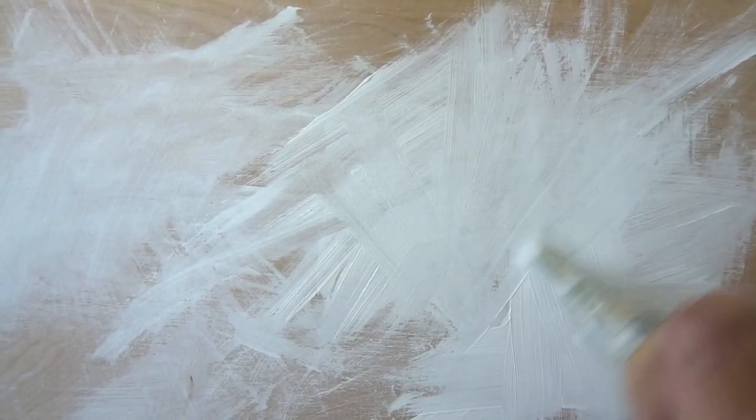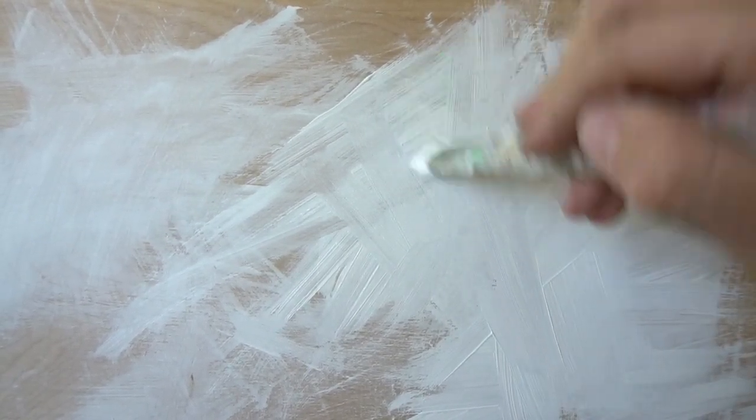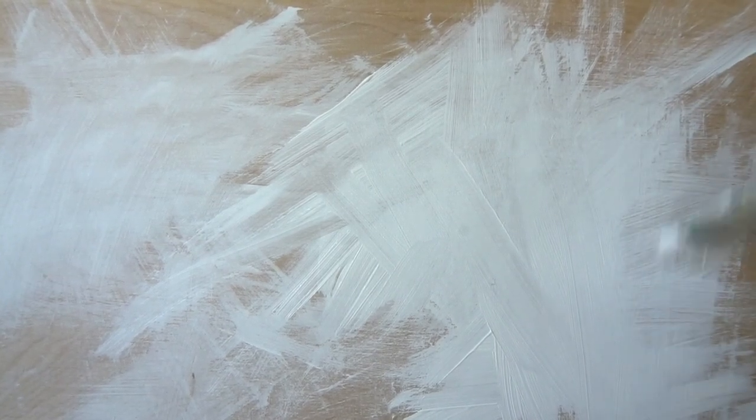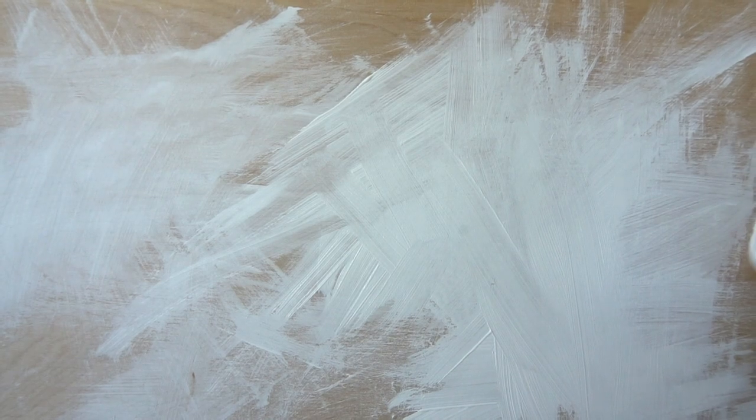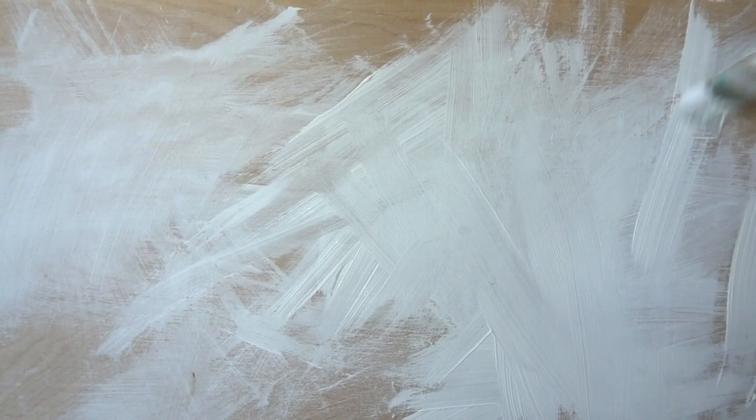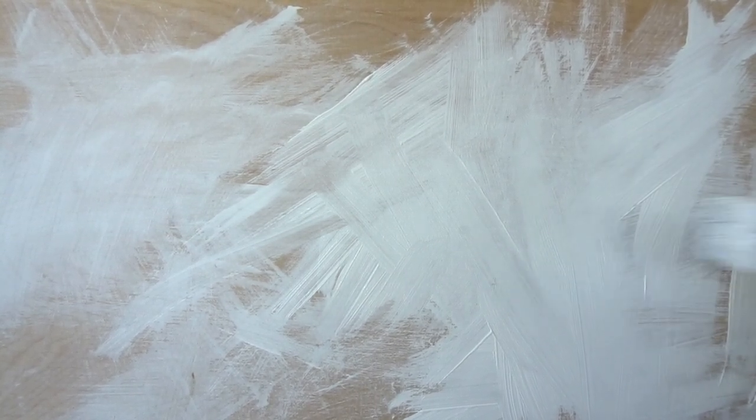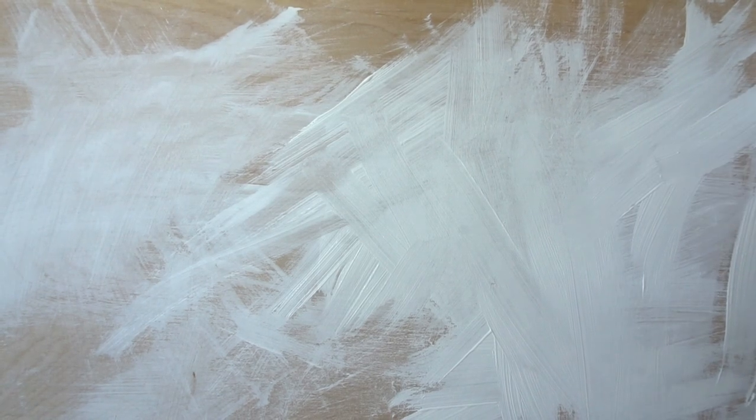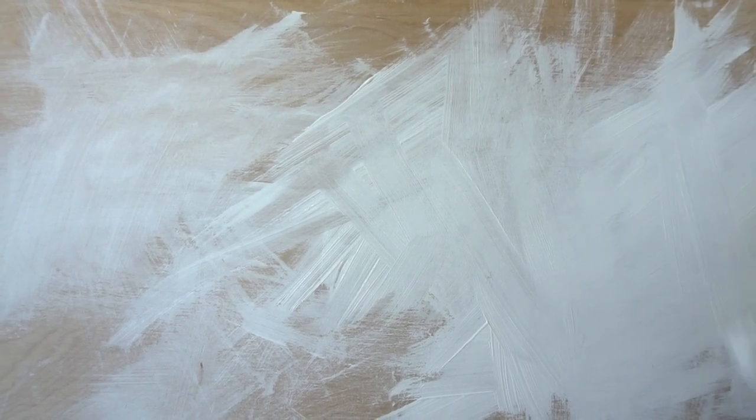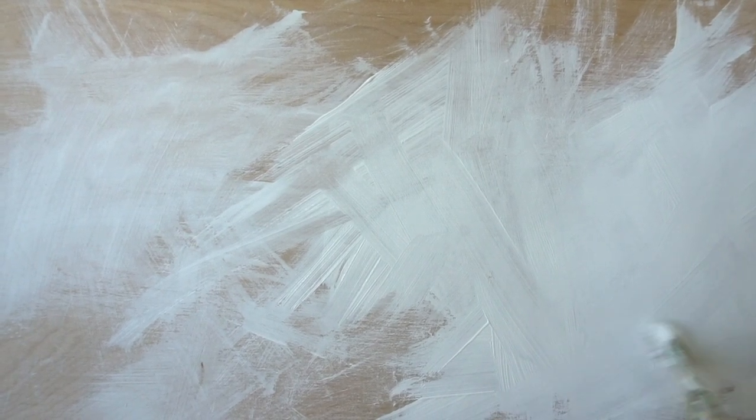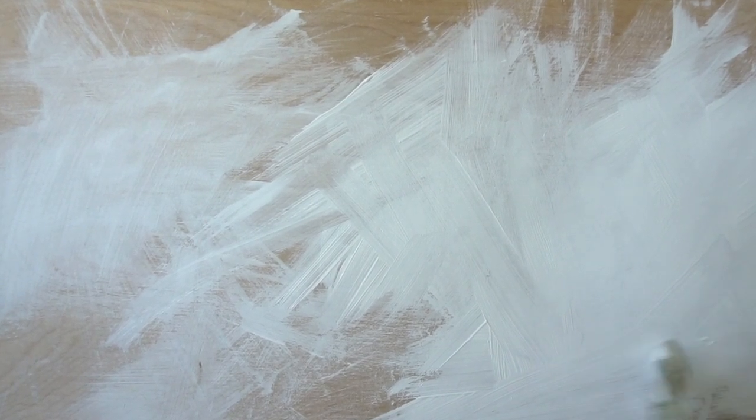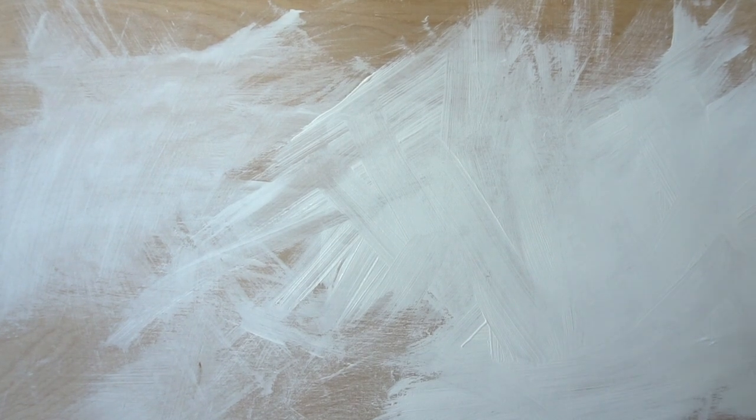Those are the tips that I have for painting on a wood panel. Use gesso. Don't have a ton of texture under it if you don't want to see it. You could also sand it down after you paint it. You can use a few layers of gesso, but I have to be honest, I usually just use one layer. I like to vary my brush strokes and the direction that they're going in just to make it a little bit more sporadic.